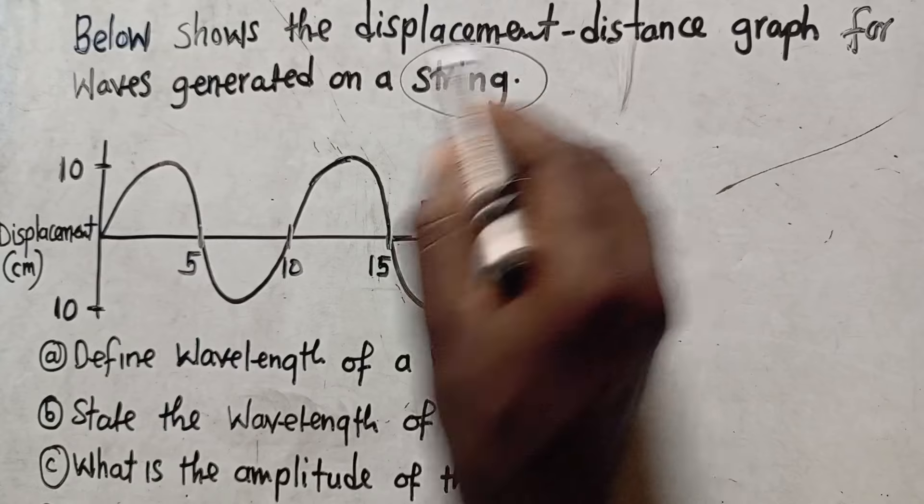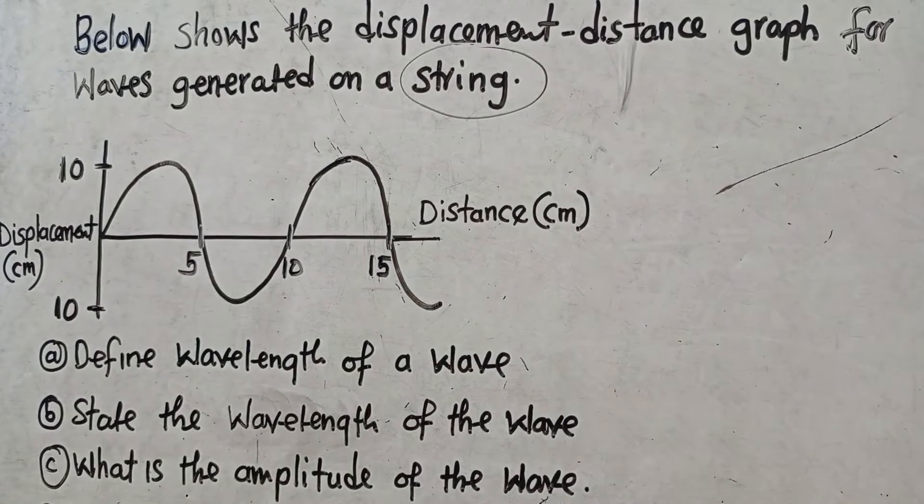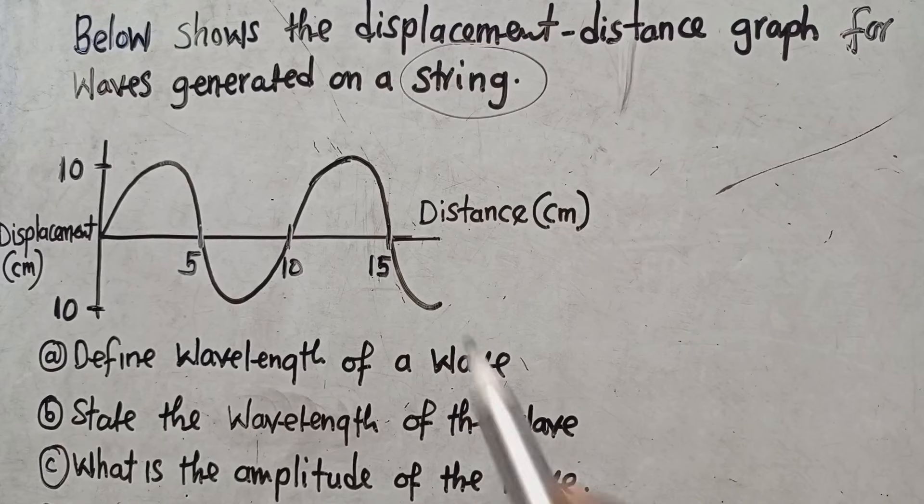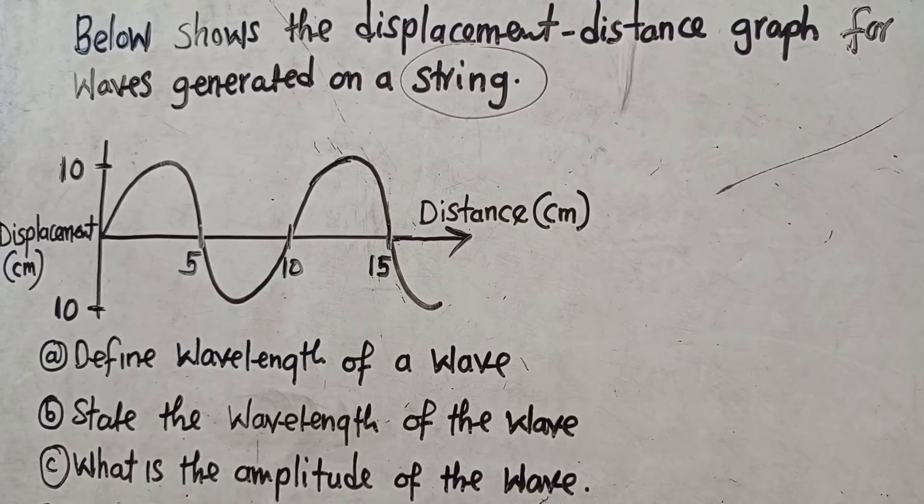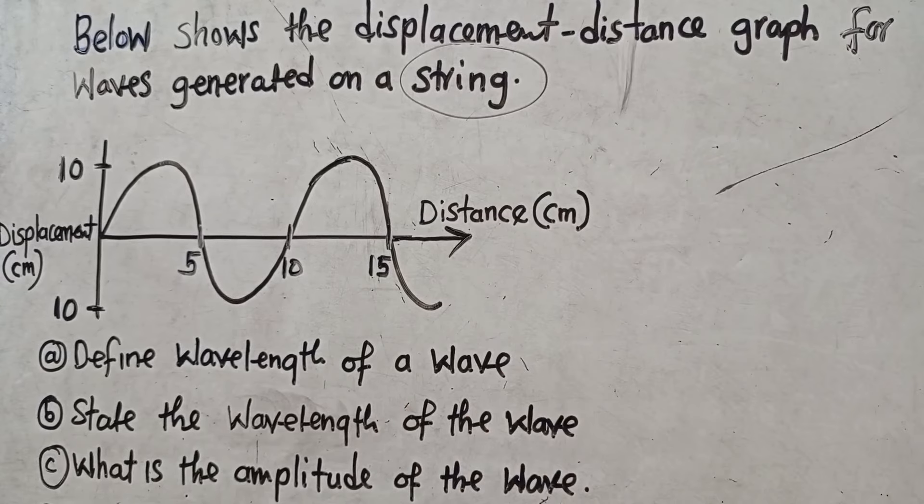One example that you need to know is that waves that are generated on a string are called transverse waves. What is a transverse wave? A transverse wave is a type of wave whose particles vibrate at a right angle or perpendicular to the direction of the travel of a wave. So in this case the travel of a wave is in that direction.